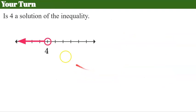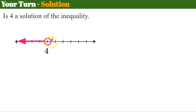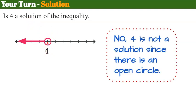Here's your turn again. Determine if 4 is part of the solution set of this inequality. Go ahead and pause, give it a thought, and come back when you're ready. Welcome back. Because 4 is where the open circle is, 4 is not a solution to this inequality. Because it's not a closed circle — it's open — this represents all values less than 4 but not including 4.